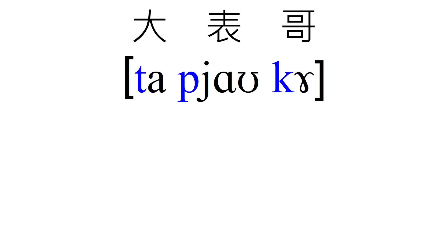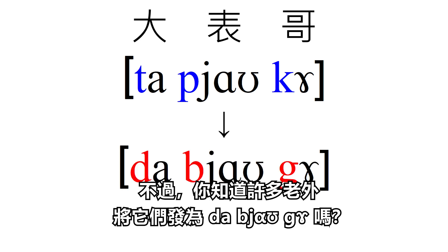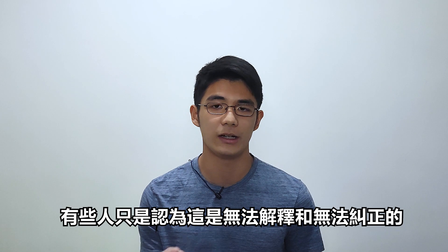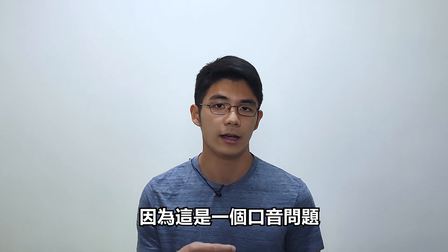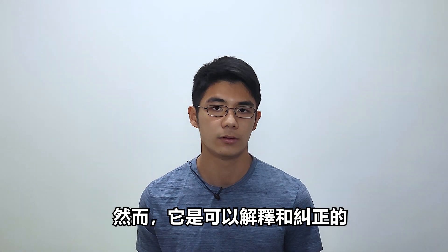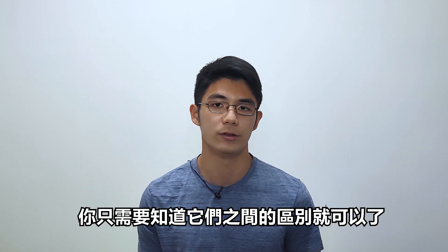How do we pronounce these three words in Chinese? 大表哥. Right, a piece of cake. However, do you know that many English native speakers pronounce them as 大表哥? You can clearly hear the difference. Some people just assume it's unexplainable and uncorrectable as it's an accent problem. Yet, it is explainable and correctable. The reason is that the BDG in English and the BDG in Chinese are different, and you just have to know the difference between them.